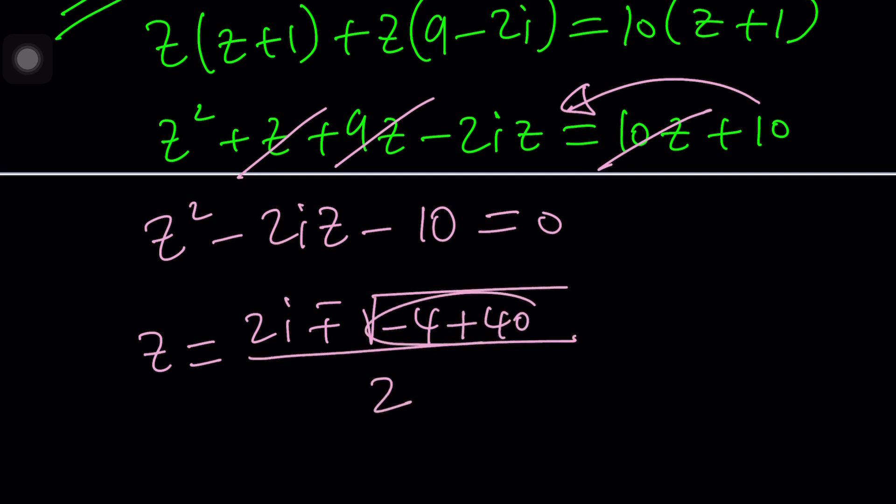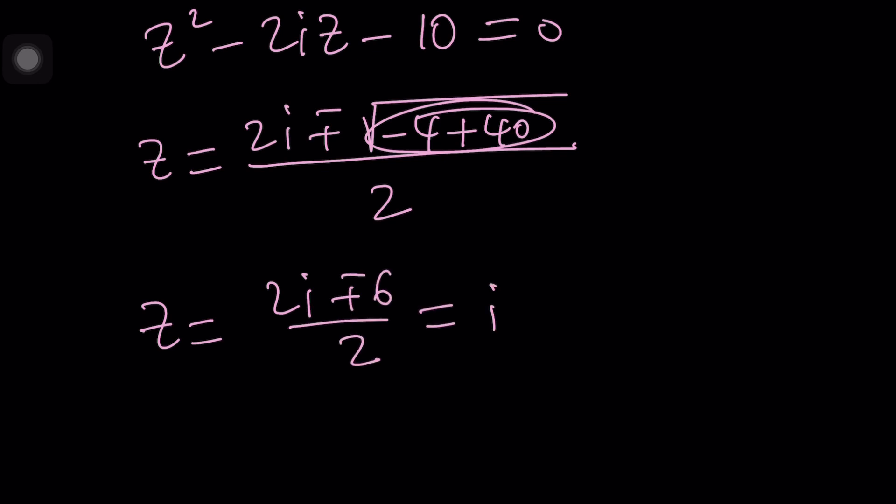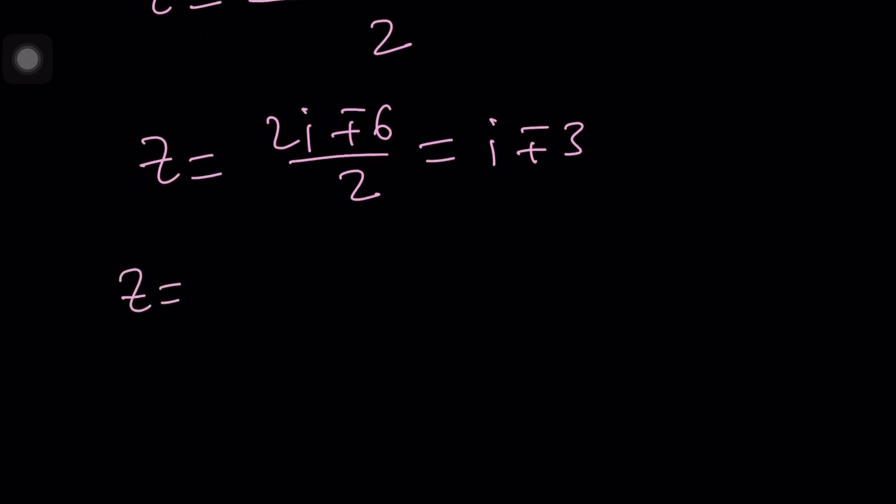That's going to be 6 with a plus or minus. So we get 2i plus or minus 6 divided by 2, and of course you can write it as i plus or minus 3. That's it, there's no division. So those are the values. In other words, z can be written as 3 plus i or z can be written as negative 3 plus i.